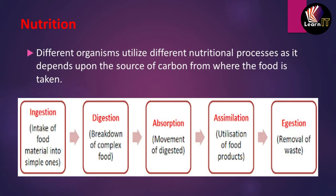Nutrition for an organism is divided into five steps. The first is ingestion — the intake of food material from the external environment into the internal environment. The second is digestion — the breakdown of complex food molecules into smaller molecules. The third is absorption — the movement of digested material where the simpler molecules are absorbed by the body.